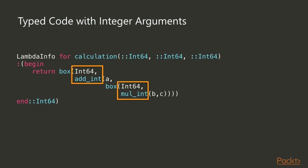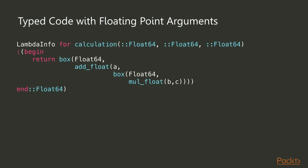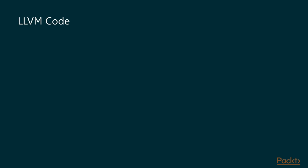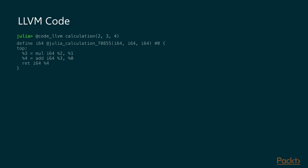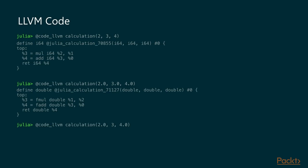Julia has figured out, by looking at the data flow through `calculation`, that it will return a 64-bit integer if the inputs are 64-bit integers. For the floating-point version, Julia adds floating-point specific arithmetic functions and determines the result will be a 64-bit floating point. From here we move to generating LLVM — low-level virtual machine — code, which we can inspect with the `@code_llvm` macro, for integers, floating-point, or even mixed arguments.